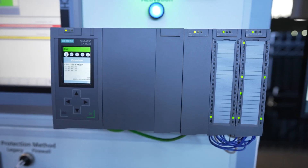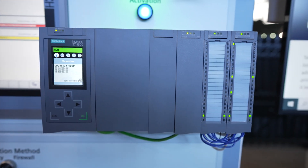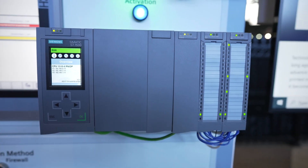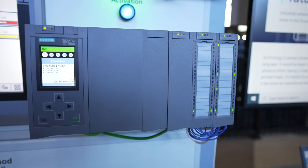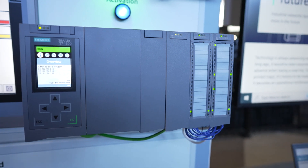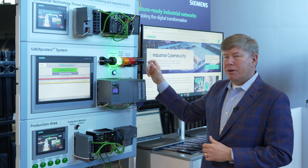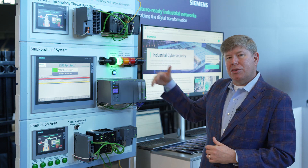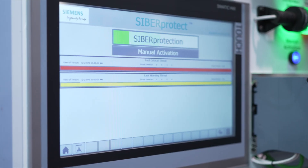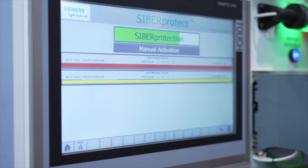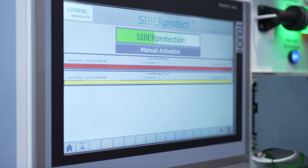Those blocks will then parse the syslog message that's sent from the intrusion detection system or the next-gen firewall. That syslog message has a criticality level. We parse that out, and based on the level of that code, we can either log it on the screen as information only.